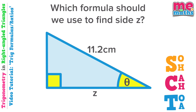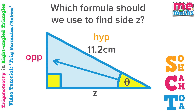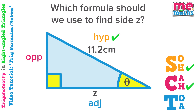So all we're going to be doing here is deciding which formula we'd use to find side z — we're not actually going to be working it out. Firstly we'll label our sides up then. The hypotenuse is opposite the right angle. Next, the opposite is opposite the active angle — in our case that's the angle marked as theta — and finally we have the adjacent. Now to decide which formula we need to use, we'll look at which sides are active in our question. We've been given the hypotenuse, so that is an active side.